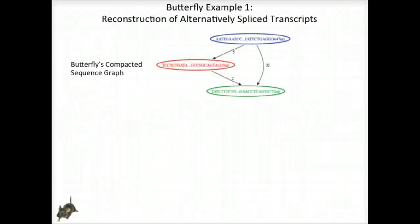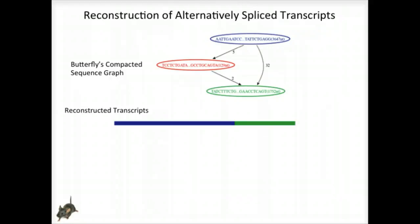Here's a real example to demonstrate how this works in practice. In our mouse RNA-seq dataset, we find a compacted de Bruijn graph that has three nodes. By traversing the path from the top blue node to the bottom green node, we generate a single transcript sequence.